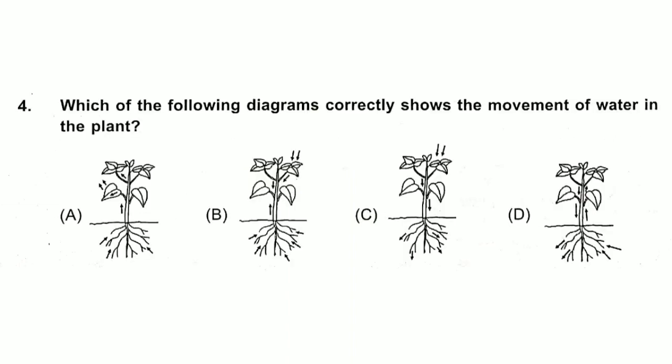Question 4: Which of the following diagrams correctly shows the movement of water in the plant? Answer is option A.